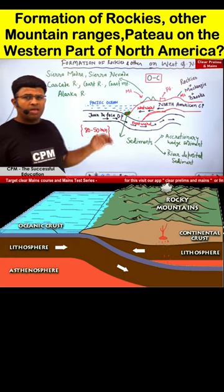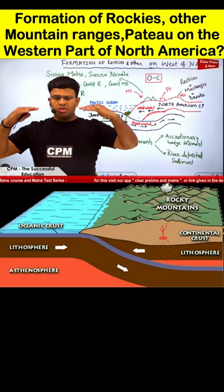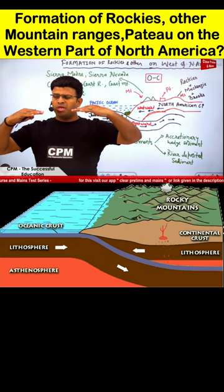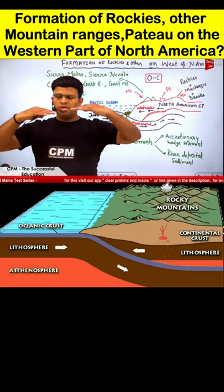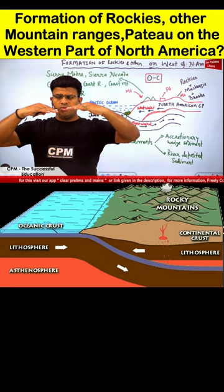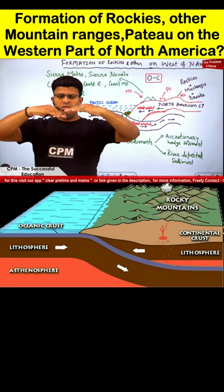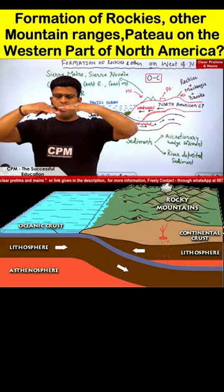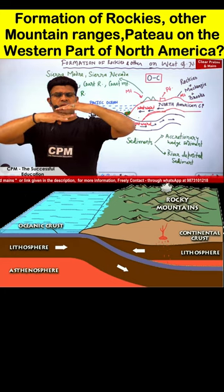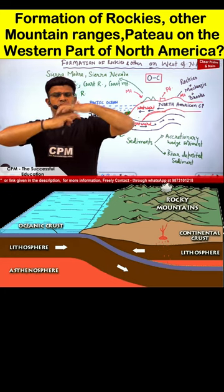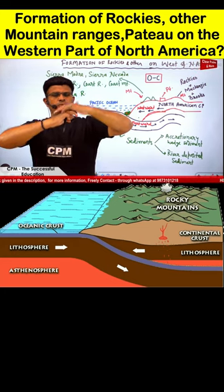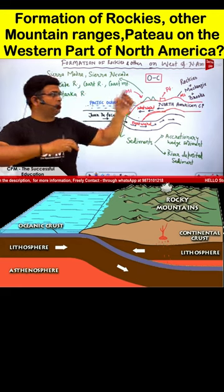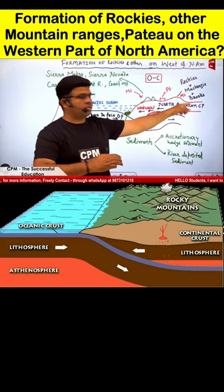During that period, the Juan de Fuca oceanic plate is moving eastward and converging, subducting below the less dense North American plate moving westward. During the subduction, as it moves downward, it uplifts this region, resulting in the formation of the Rockies.